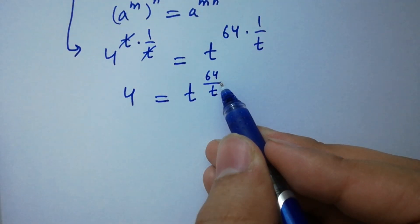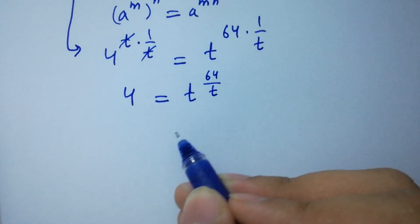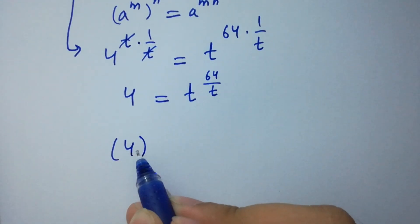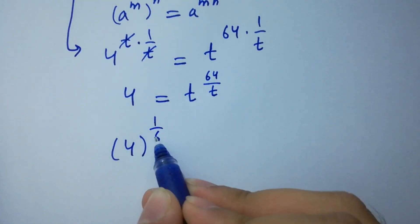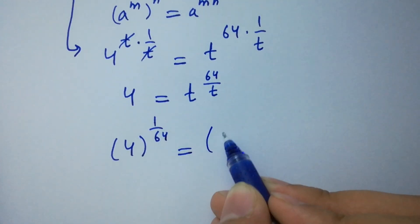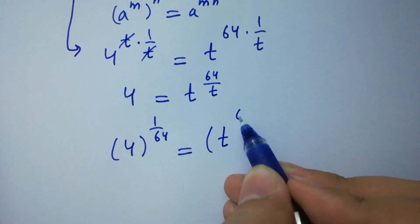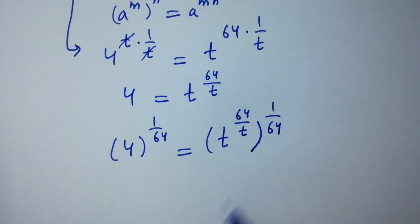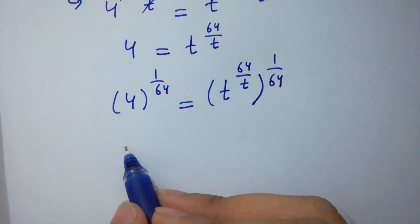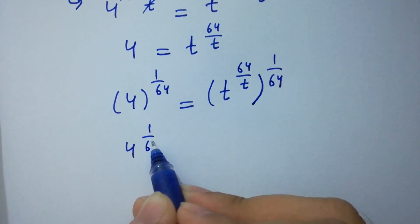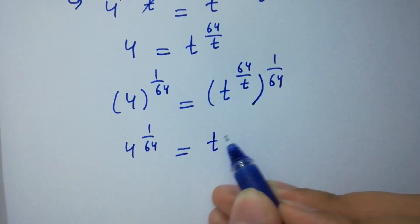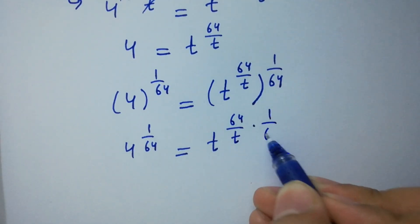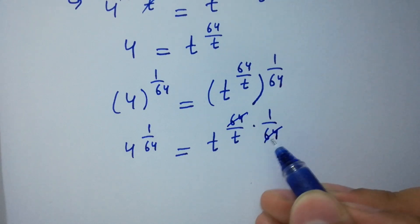To cancel this 64, take power 1 over 64 on both sides: 4 to the power 1 over 64 equals t to the power 64 over t times 1 over 64. The 64 and 64 cancel.